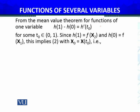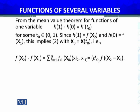From the mean value theorem of function of one variable, I must have h of 1 minus h of 0 over 1 minus 0 equals h dash of t naught for some t naught between 0 and 1. Since h of 1 is the composition function f of x2 and h of 0 equals f of x1...